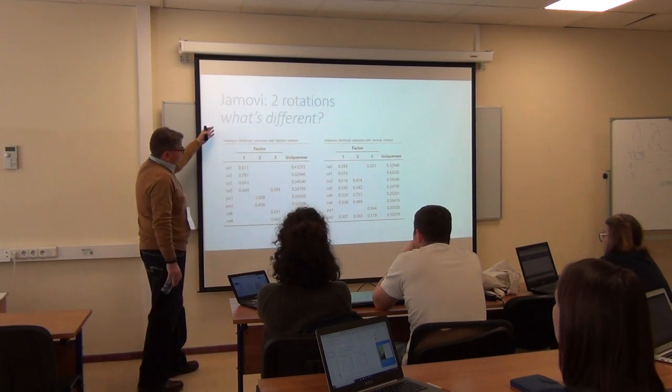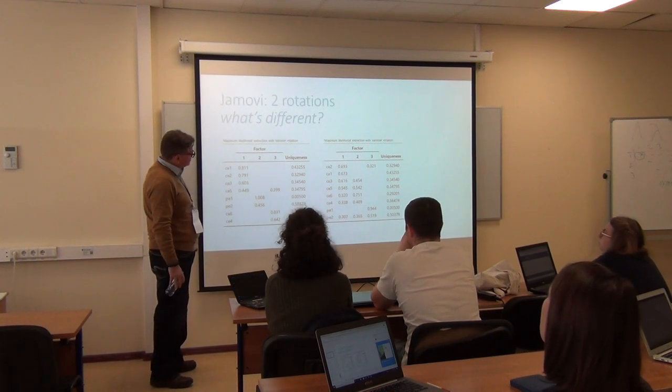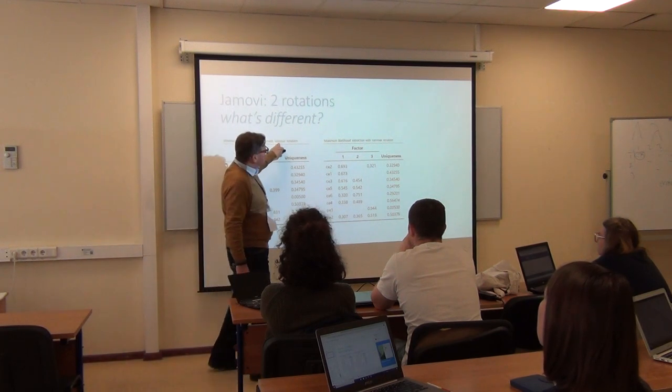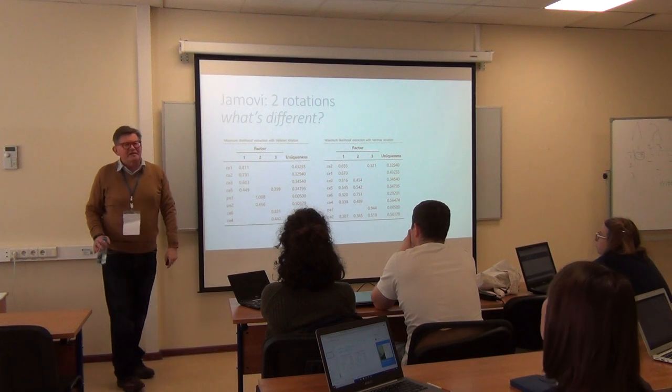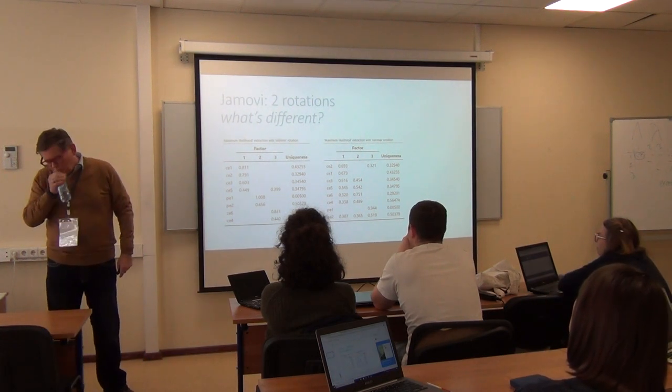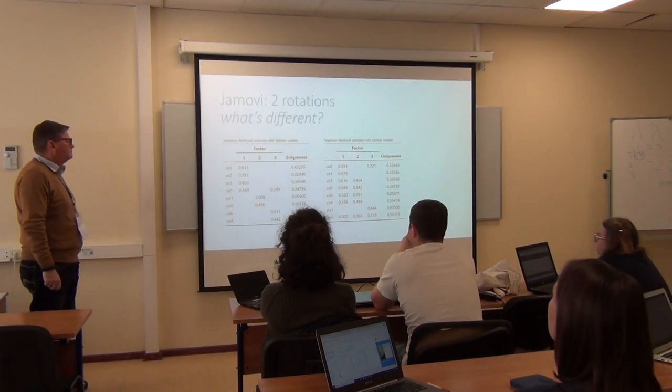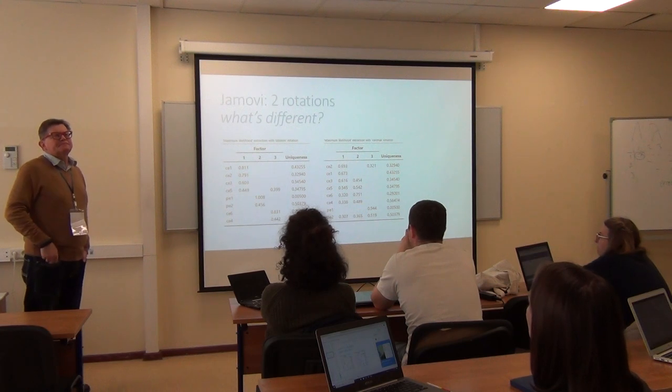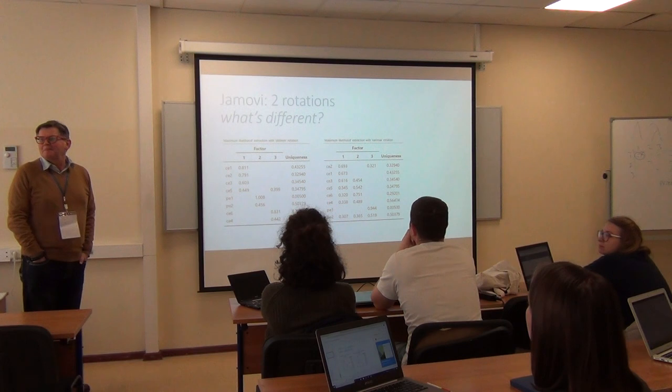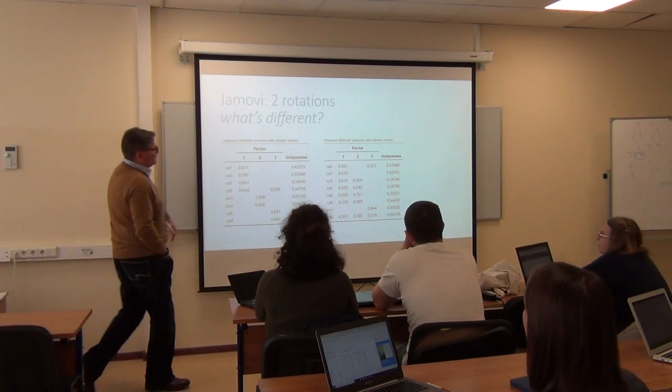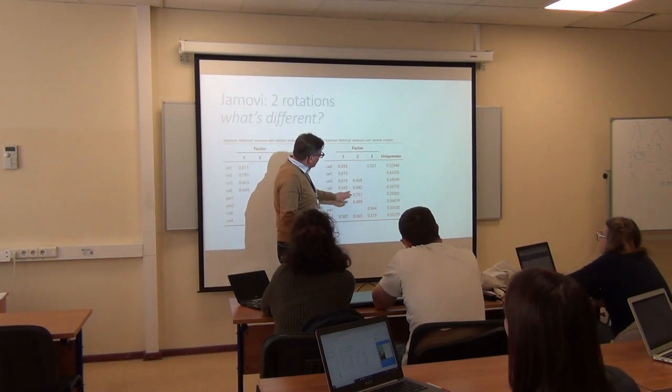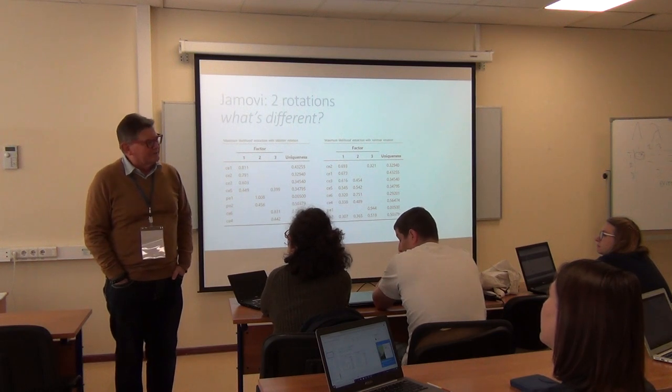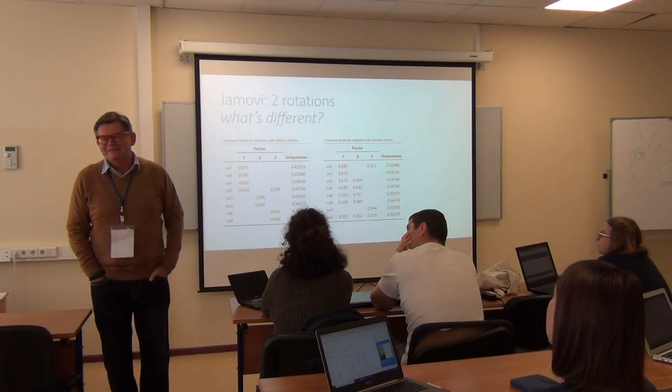So here's what Jamovi gave me for the same eight items, CE1 to 6 and PE1 and 2. This is oblique and this is varimax. What do you see that's different between these two results? Cross loadings are much stronger under varimax. What does that mean? What's the implication? The hopeless structure. It's not simple structure because these cross loadings suggest when you force it to zero, the items want to be on both because the two factors are not orthogonal.